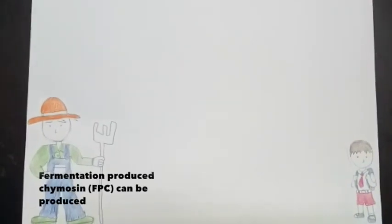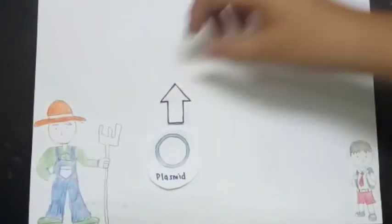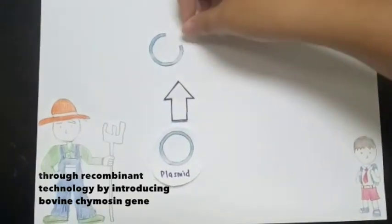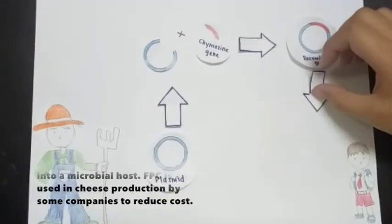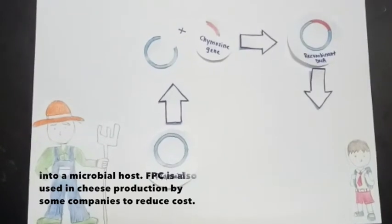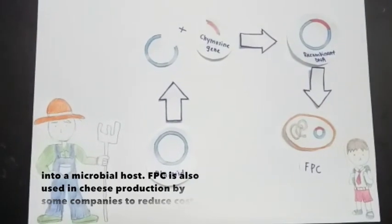Fermentation-produced chymosin FPC can be produced through recombinant technology by introducing bovine chymosin gene into microbial hosts. FPC is also used in cheese production by some communities to reduce cost.